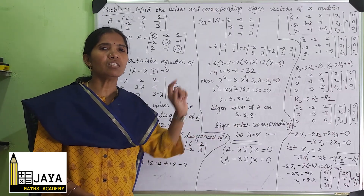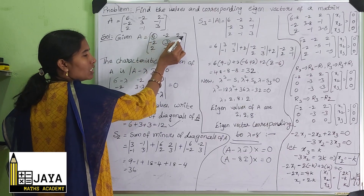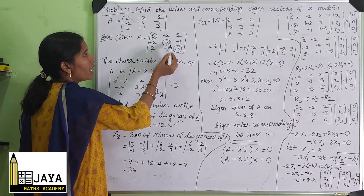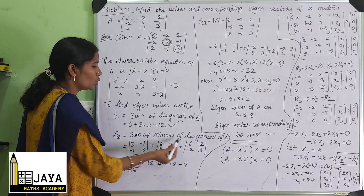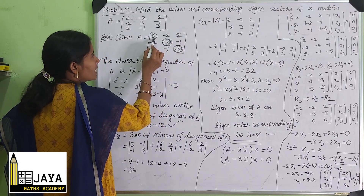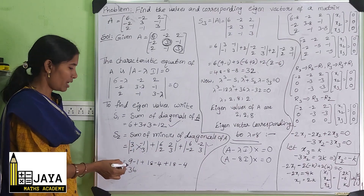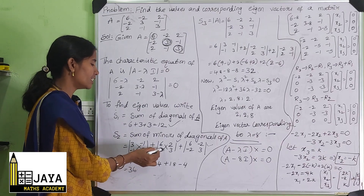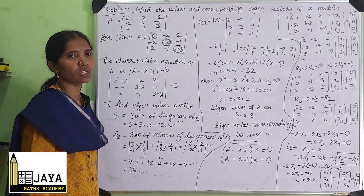S2 is the sum of the minors of the diagonal elements of A. The minor of the diagonal element 6 is [[3, -1], [-1, 3]] = 9 - 1 = 8. The minor of diagonal element 3 (second) is [[6, 2], [2, 3]] = 18 - 4 = 14. The minor of diagonal element 3 (third) is [[6, -2], [-2, 3]] = 18 - 4 = 14. So S2 = 8 + 14 + 14 = 36.